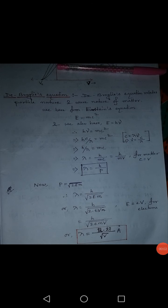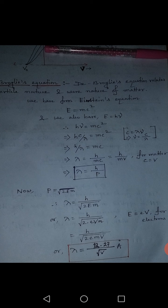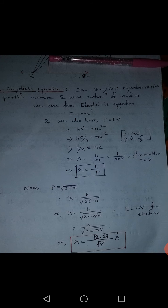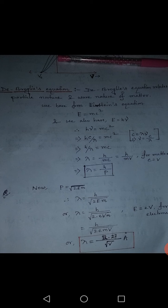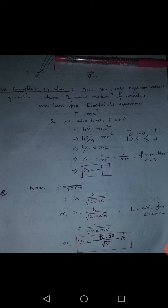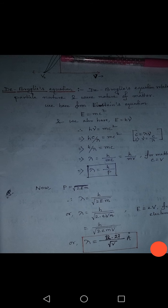In today's video we will discuss de Broglie's equation. This equation relates the particle nature and wave nature of matter, because according to de Broglie, when a matter particle moves with a very high velocity it behaves like a wave. In other words, a matter particle shows both particle nature as well as wave nature.